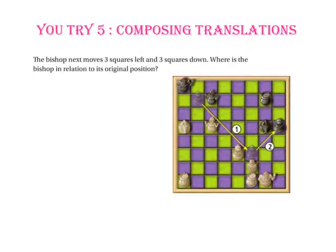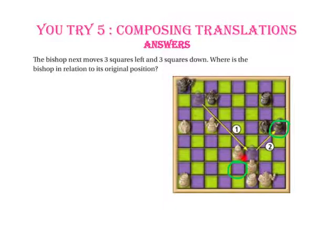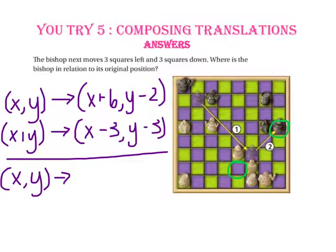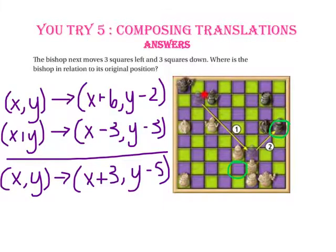Pause the video and do you try number 5. The bishop next moves 3 squares left and 3 squares down. Where is the bishop in relation to its original position? From this location, we move 3 squares left and 3 squares down. We can take our final destination from before and add our new moves — 3 squares left, 3 squares down — and get a translation of (X plus 3, Y minus 5). Or we can start at our original position and count: 3 units to the right and 5 units down, giving X plus 3, Y minus 5.